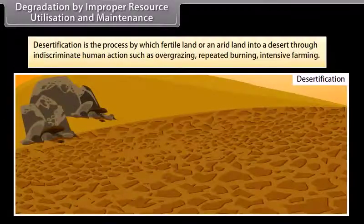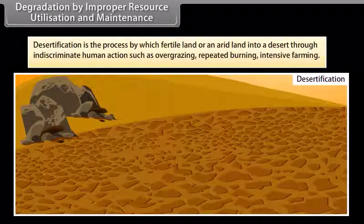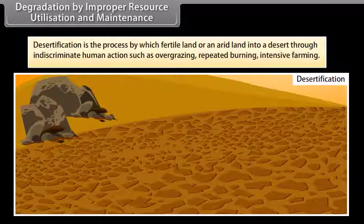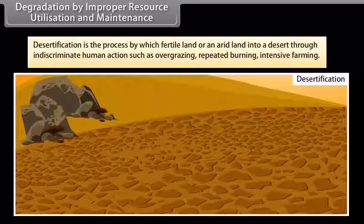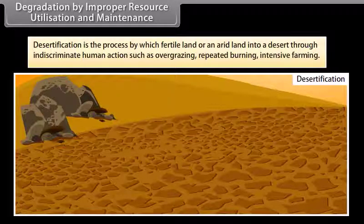Desertification is the process by which fertile land or arid land turns into a desert through indiscriminate human actions such as overgrazing, repeated burning, and intensive farming.